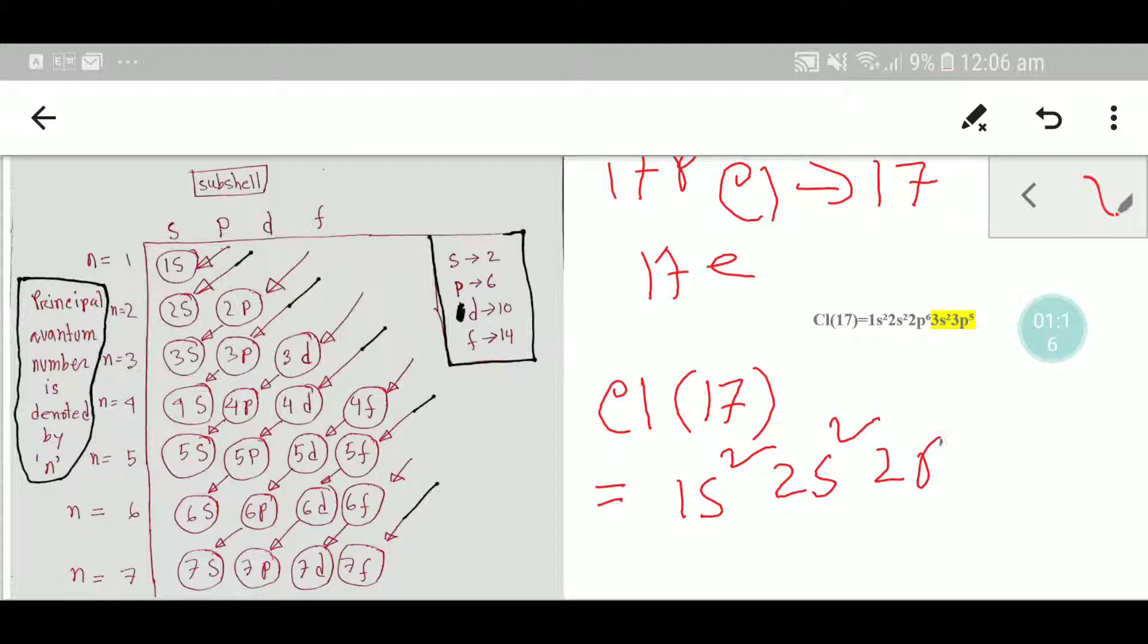Then you have to take 3s2, and then you have to place here 3p5. Now if you add 2 plus 2 is 4, plus 6 is 10, 10 plus 7 is 17.